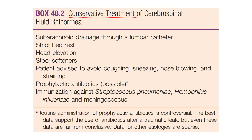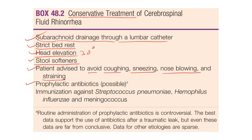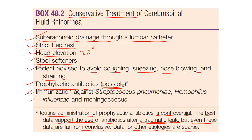Conservative management also includes subarachnoid drainage through lumbar catheter, strict bed rest, head elevation up to 30 degrees, stool softeners or laxatives, and avoidance of coughing, sneezing, nose-blowing, and straining. Prophylactic antibiotics are mentioned — routine administration is controversial; best data support the use of antibiotics in traumatic leaks, though evidence is far from conclusive. In some countries, immunization against Streptococcus pneumoniae, Haemophilus influenzae, and Neisseria meningitidis is also given as prophylaxis in CSF rhinorrhea.